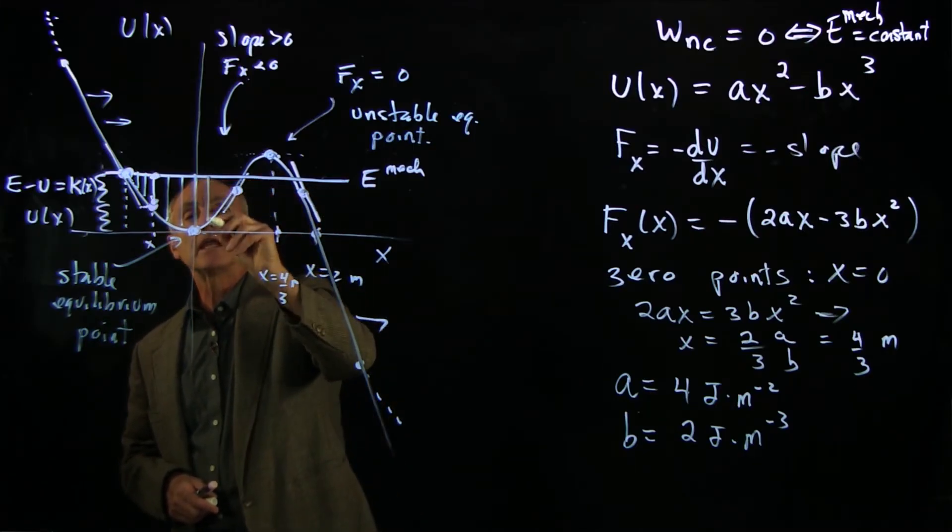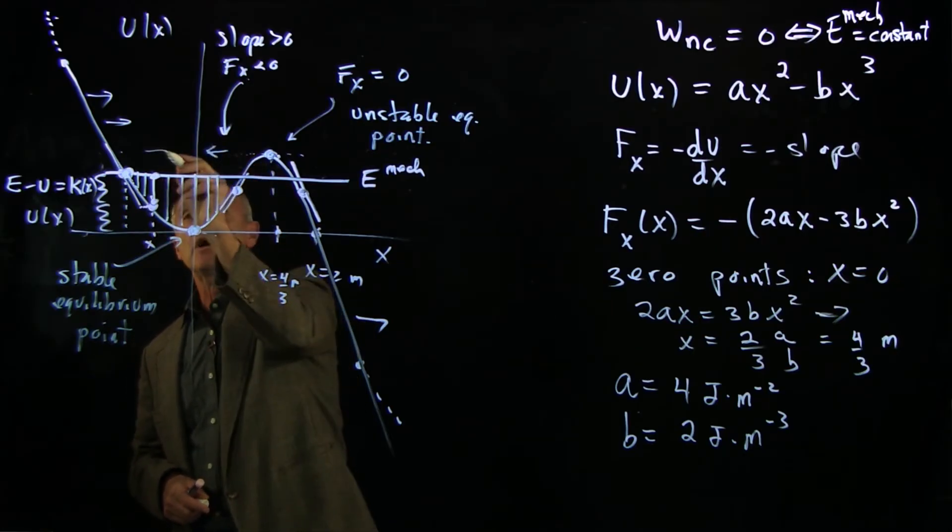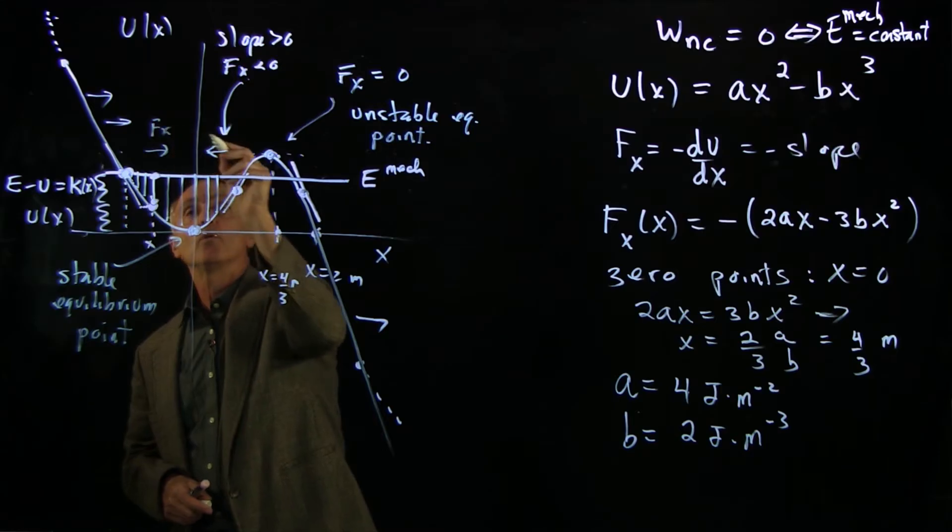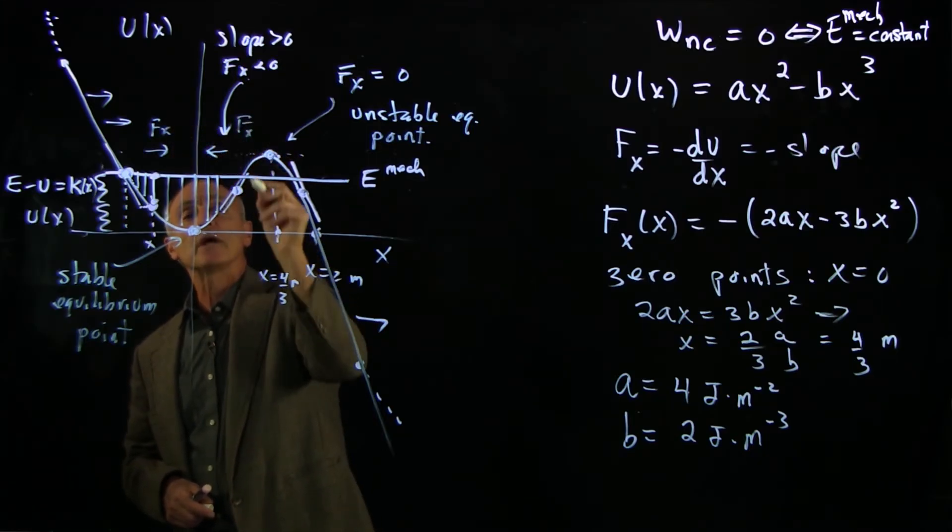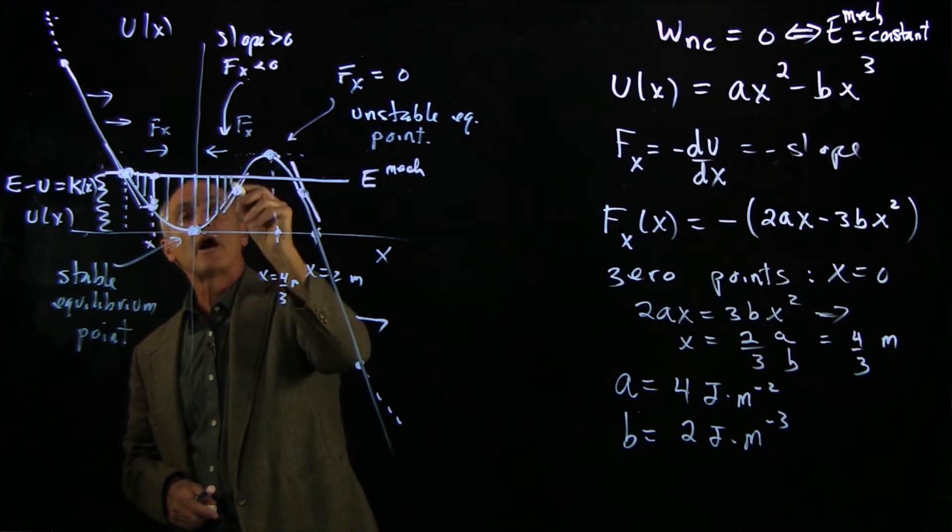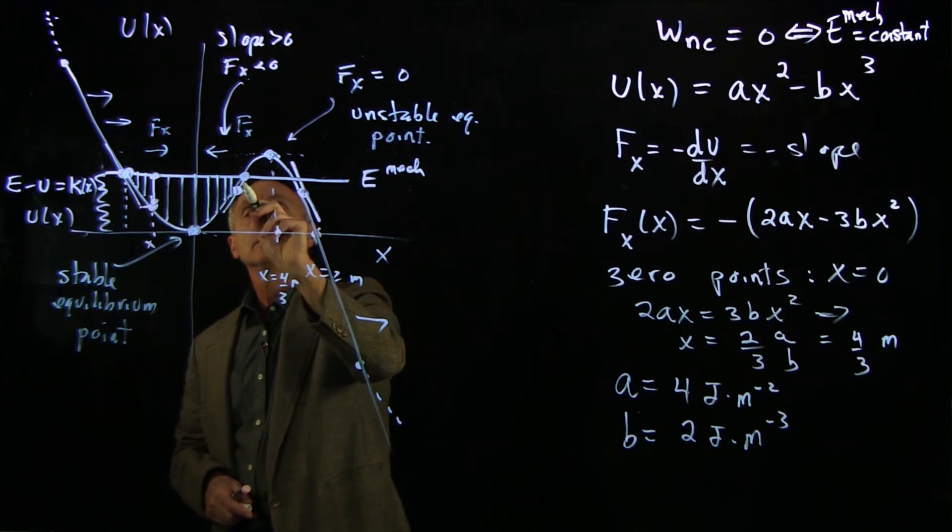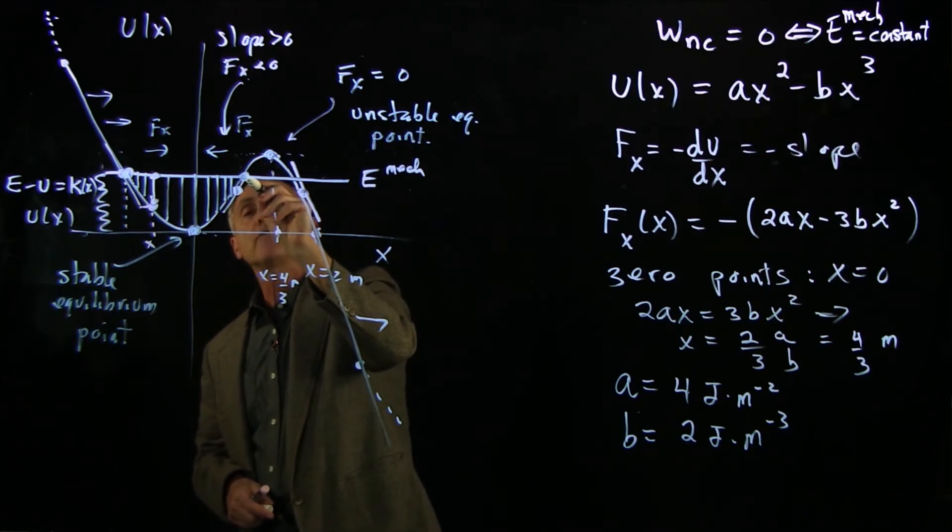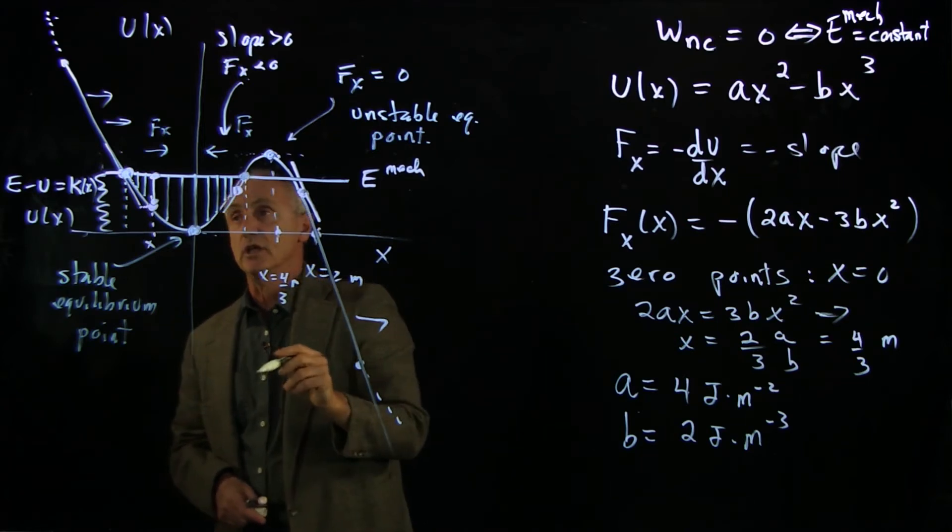Now the kinetic energy decreases, because remember, it's now going against the force. This side, the force was pointing in that direction. Here, it was in the other direction. And until we finally get to this point where, again, the energy of the system is equal to all potential energy, and so there is no kinetic energy.